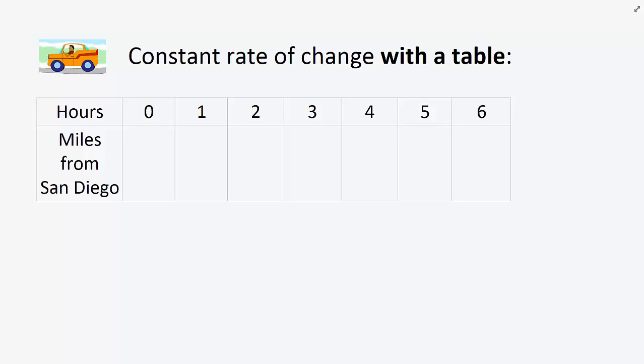We can see the constant rate of change with a table. He starts 220 miles from San Diego and gets 40 miles closer every hour.